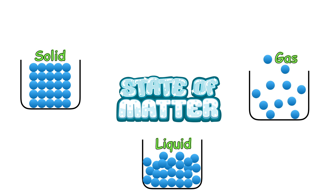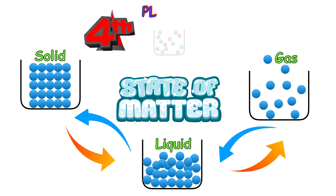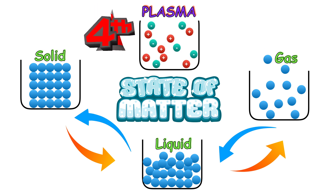Matter changes its state when energy is added to it. Solid becomes liquid and liquid becomes gas. When energy is removed, gas becomes liquid and liquid becomes solid. However, there is a fourth state — plasma. If more energy is added to gas, gas becomes plasma, the fourth state of matter.